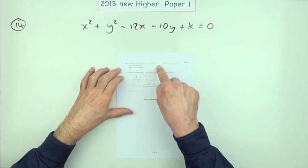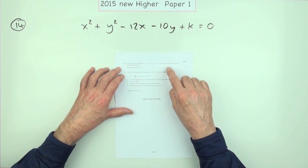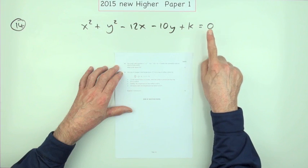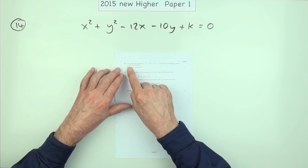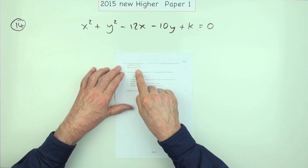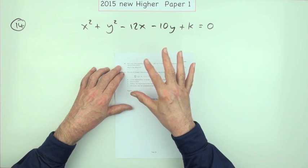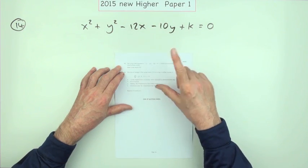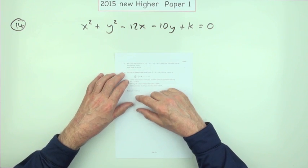Question 14 from the 2015 new hire paper — a two-mark question that caused a little confusion because there was a slip in its construction. The equation of a circle is given and it says it meets the coordinate axes at exactly three points. The question asks for the value — singular — of k, as if there's only one situation that applies, and the same question appeared in the alternative original hire paper in multiple choice with only one correct solution.